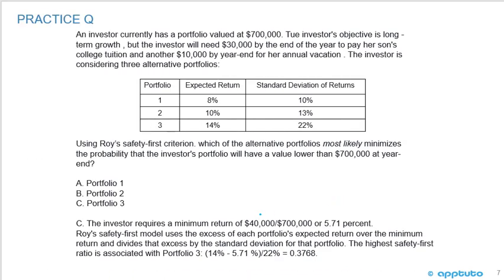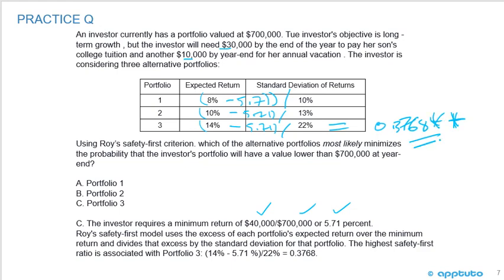The minimum return is $40,000 — the $30,000 plus the $10,000 — divided by $700,000, which is 5.71%. Calculating the safety first ratios: portfolio one: 8% minus 5.71% divided by 10%; portfolio two: 10% minus 5.71% divided by 13%; portfolio three: 14% minus 5.71% divided by 22%. This gives 0.229, 0.330, and 0.377 respectively. Portfolio three has the highest safety first ratio at 0.377, so we select portfolio three. That's the last slide for this LOS. Thank you.